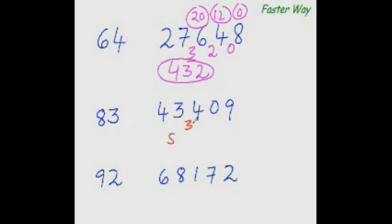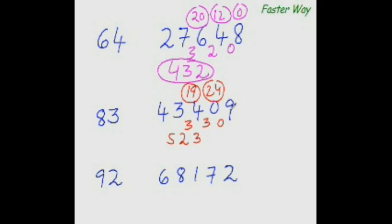Next example with main divisor 8 and unused digit 3. 8 goes into 43 five times, remainder 3. New dividend = 34 minus (3 × 5) = 34 minus 15 = 19. 8 goes into 19 twice, remainder 3. New dividend = 30 minus (3 × 2) = 24. 8 goes into 24 three times, remainder 0. New dividend = 9 minus (3 × 3) = 0, so the answer is 523.